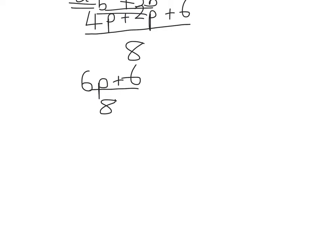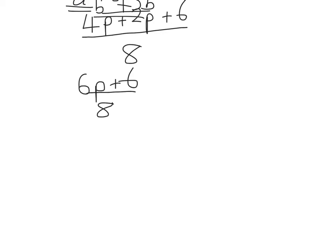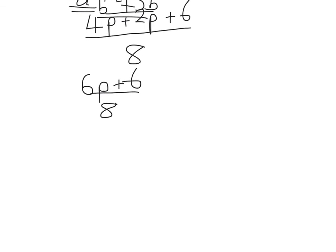Now a key thing with these questions is also always to look for can you make something that's simpler. So we're going to factorize this one. So 6 bracket P plus 1 over 8.